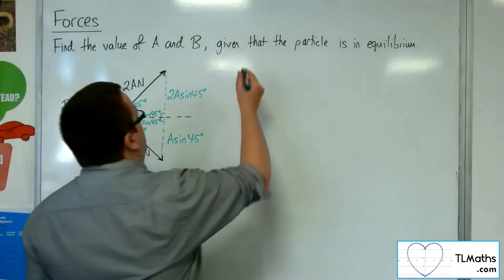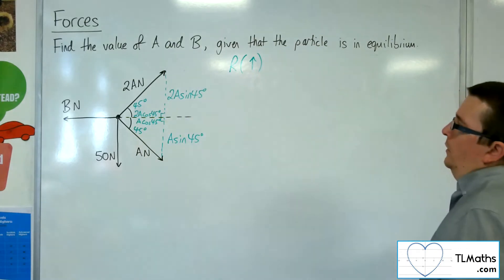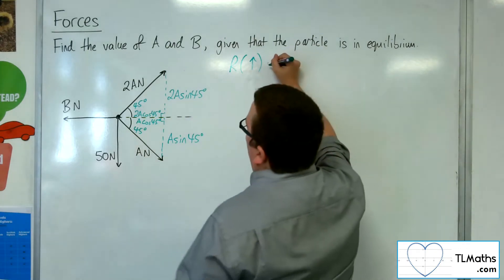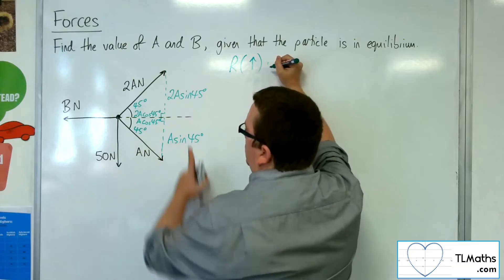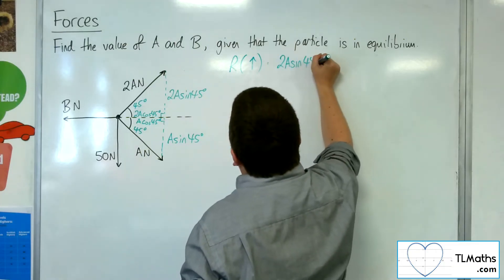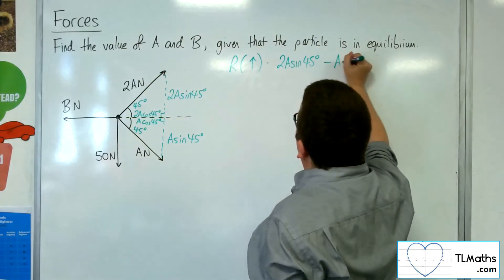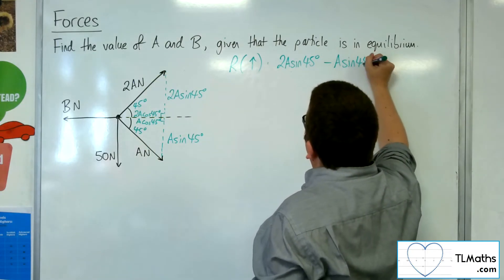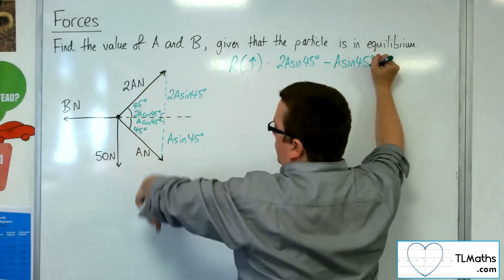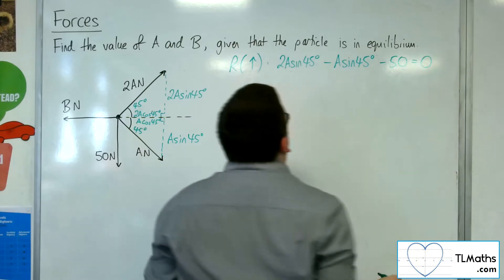So I'm going to resolve this vertically first. So what have I got? Well, I've got the 2A sine 45 working upwards. Then working downwards, I've got A sine 45, and I've got the minus, and I've got the 50 newtons working downwards as well. And it's in equilibrium, so that's got to be equal to zero.